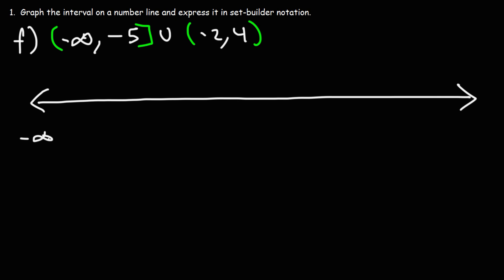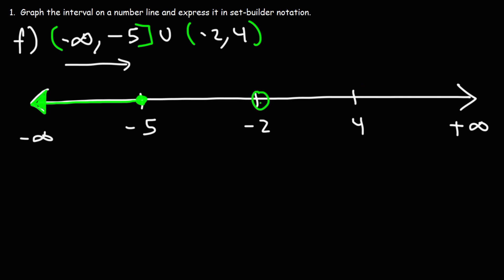So we have negative infinity on the left and positive infinity on the right. Going from left to right, the first number is negative 5, the next is negative 2, and the next important number is 4. We have a closed circle at negative 5, and it goes towards negative infinity. Then we pick up again at negative 2 with an open circle, and we have an open circle at 4. That's how we can graph it on a number line.